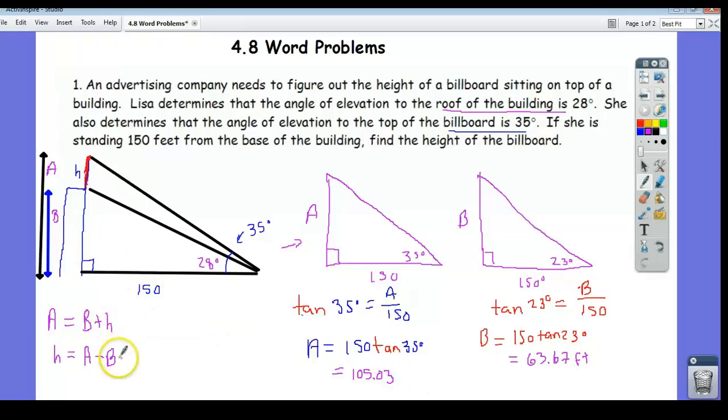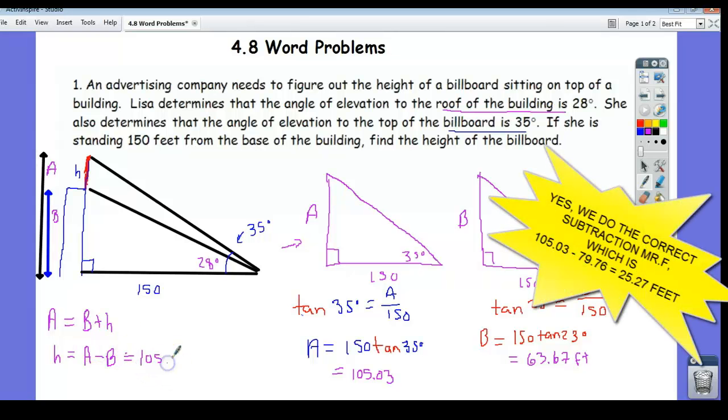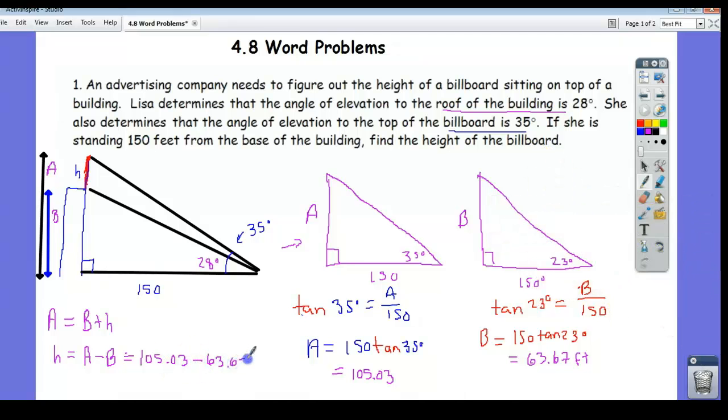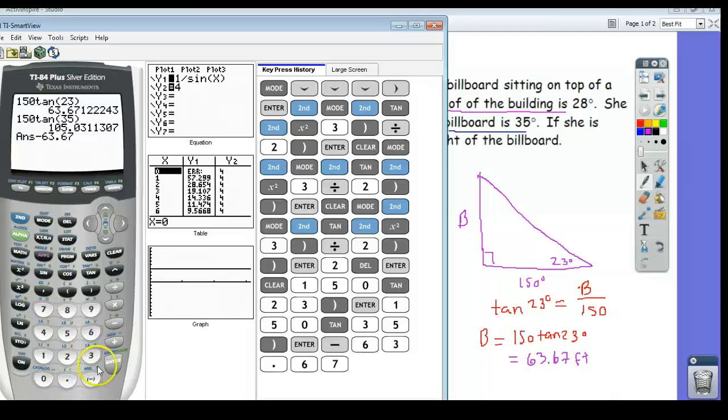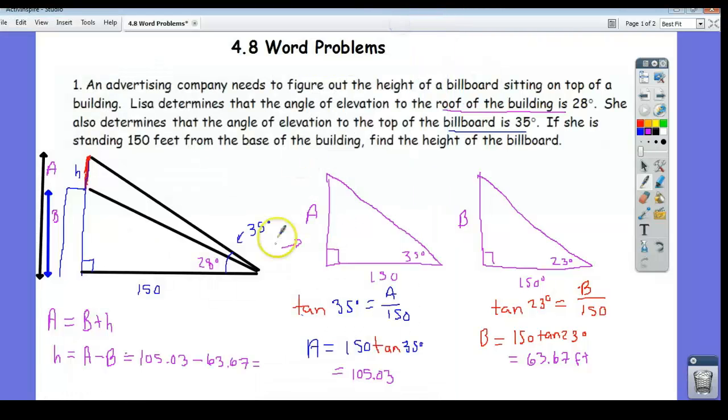So now that we know a and b, we can get the height of the billboard really easily. We just do the subtraction. 105.03 minus 63.67. And when we do that, we get 41.36 feet. So that's actually a pretty tall billboard.